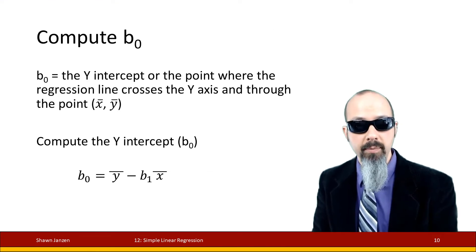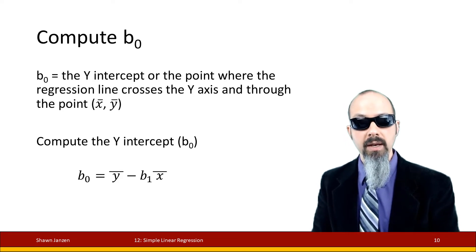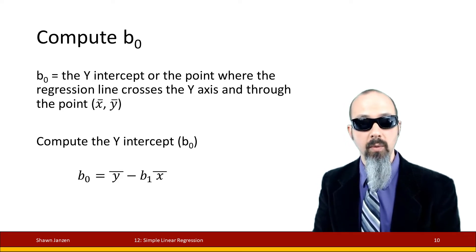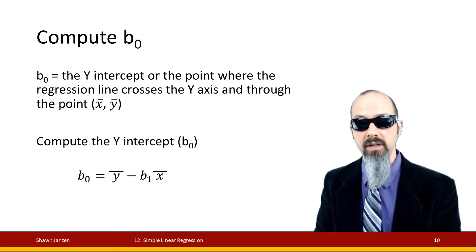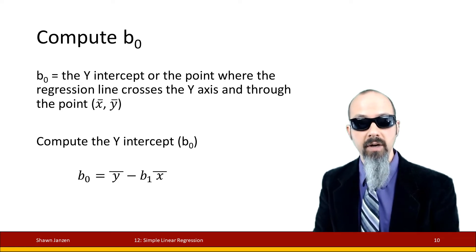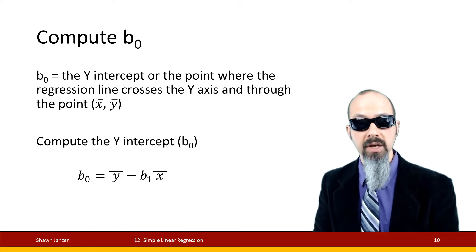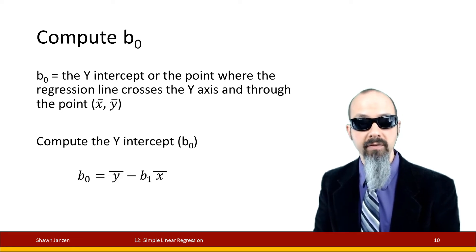For b0 — the intercept — we take a slightly different computational approach. Since b0 is where the regression line crosses the y-axis, we know it also passes through the point defined by the mean of x and the mean of y. So if we already know the slope, we can compute the intercept as: b0 equals the mean of y minus the slope times the mean of x.